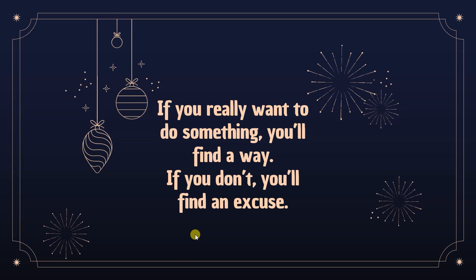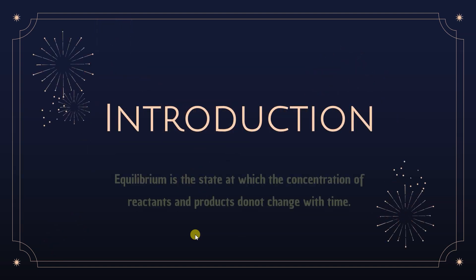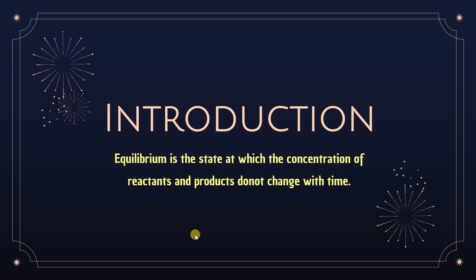Let's start the topic. Equilibrium is the state at which the concentration of reactants and products do not change with time. First of all, we should know when equilibrium will exist. Equilibrium never occurs in an irreversible process. If the process is irreversible, that means A is converting into B but B is not going back to A — that reaction is called irreversible and will not show equilibrium.